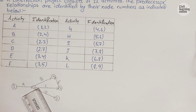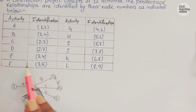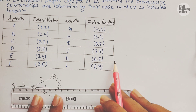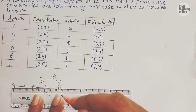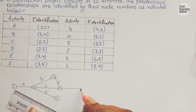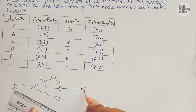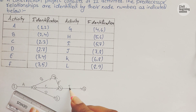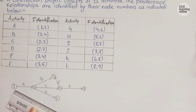We have another activity F commencing from node 3 to node 5. From node 3 we draw another node that is 5, draw a circle and the activity from 3 to 5 is activity F.